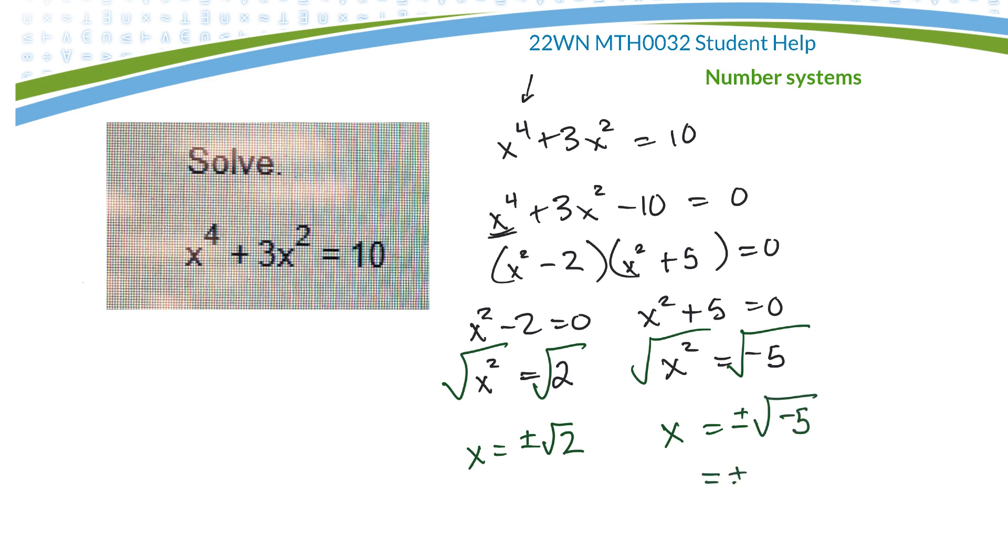And the square root of negative 5, I could rewrite as the square root of 5 times the square root of negative 1, or plus or minus root of 5i. So there's the four roots that we have: a plus and a minus root 2, and a plus and a minus root 5i.